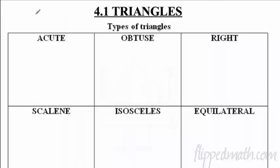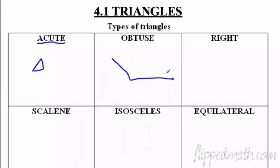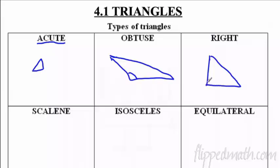Let's start this entire unit by making sure we understand triangles. We have different types. Acute triangles have all angles less than 90 degrees — if you have an acute triangle, something like this, all the angles are less than ninety. Obtuse means you've got one angle that is bigger than ninety. And a right triangle is just a triangle that has a right angle in it.